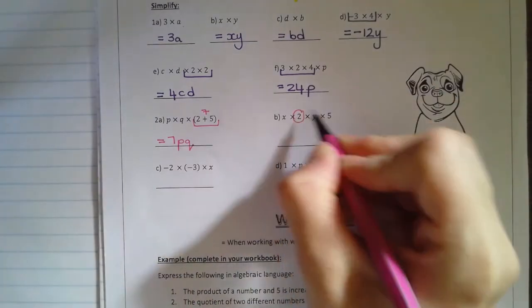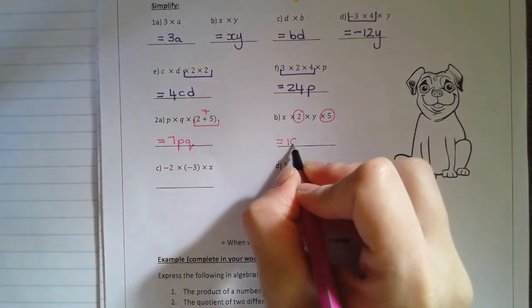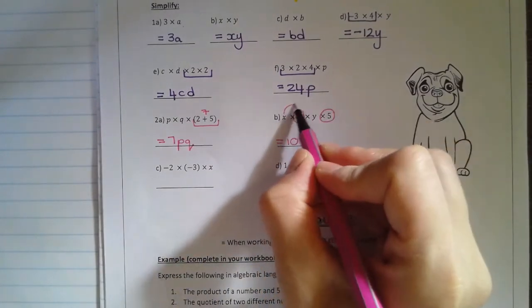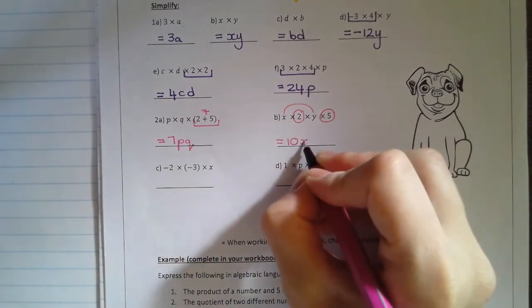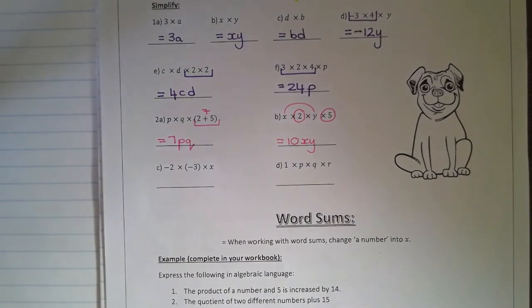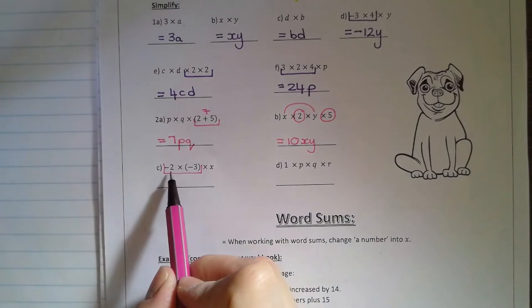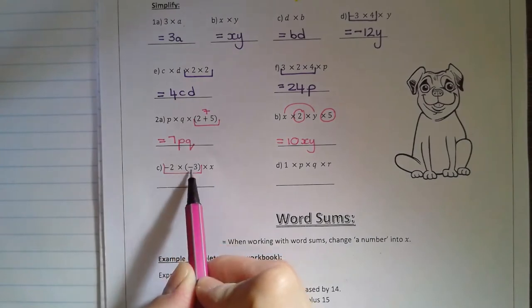Then for this one, we've got to group numbers. So it's going to be two times five is ten, and then X and Y in that order are being multiplied. Then for C, we have some negative numbers involved. Negative two times negative three.